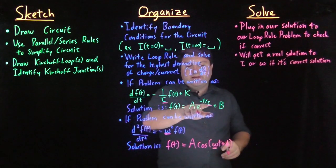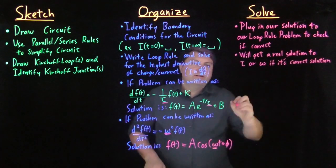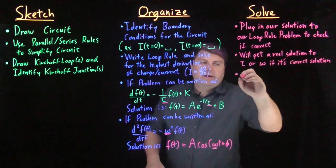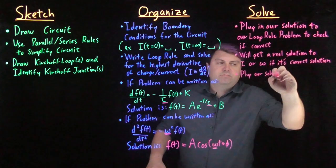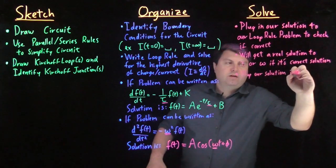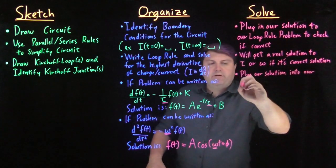So from this now we know either tau or omega. And then we want to plug our solution into our boundary conditions.